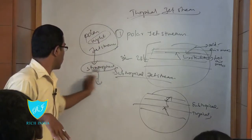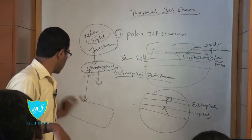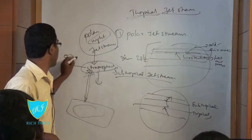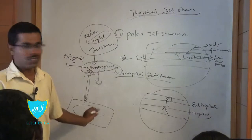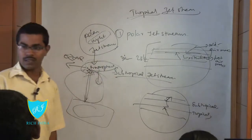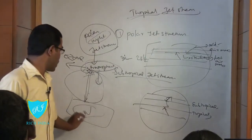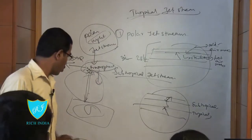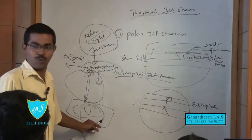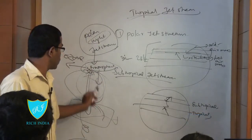This jet stream flows from the troposphere up to the stratosphere. The CFCs will be in the troposphere, and they will be taken up to the stratosphere where the ozone layer exists, causing ozone depletion. The polar night jet stream, flowing in this region, comes in contact with the tropospheric layer and carries the CFC layer up to the stratosphere.